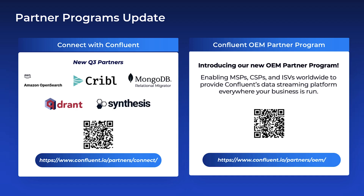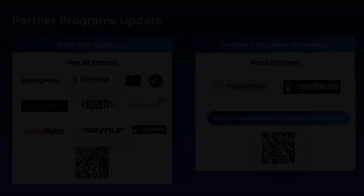We have some exciting new updates from our technology partners. The Connect with Confluent program turns one year old, with 50-plus integrations now available. This quarter, we're excited to announce our new entrants. We're also very excited to introduce Confluent's new OEM partnership program, enabling MSPs, CSPs, and ISVs worldwide to provide Confluent's data streaming platform everywhere your business is run. Scan or go to the links to learn more. We also have two new partners joining the Confluent Migration Accelerator. If you're looking to build products with Kafka or Confluent, scan or go to the links to learn more about these exciting partner updates.